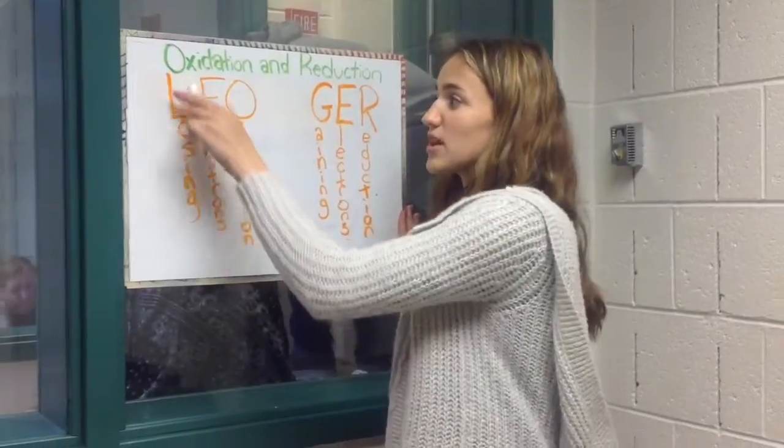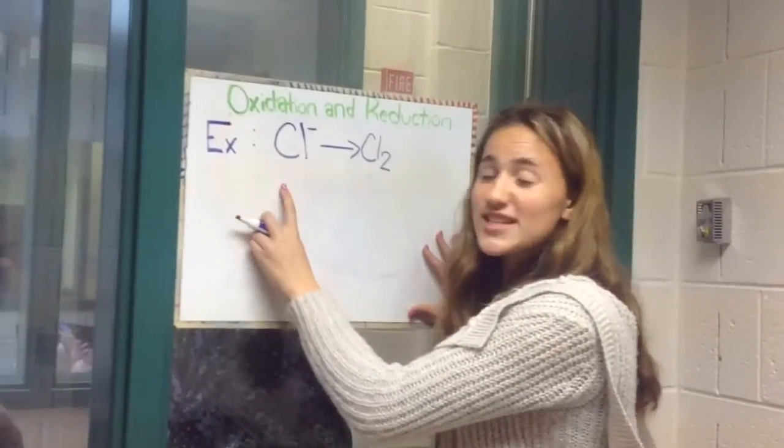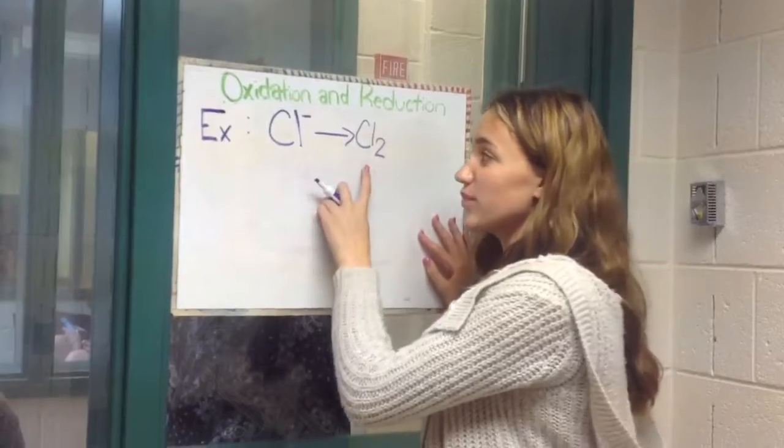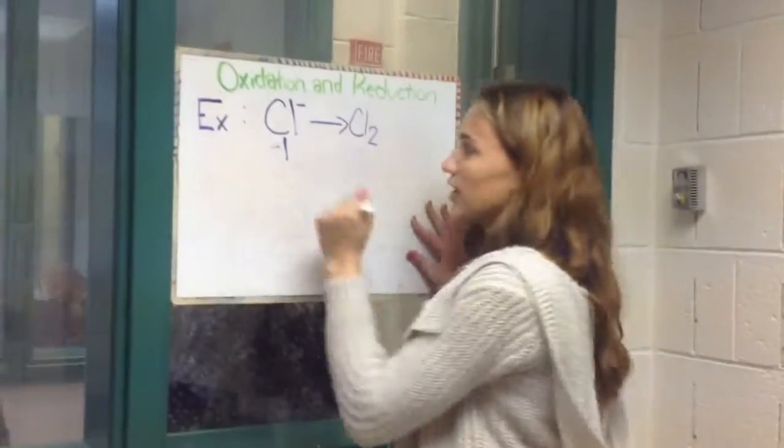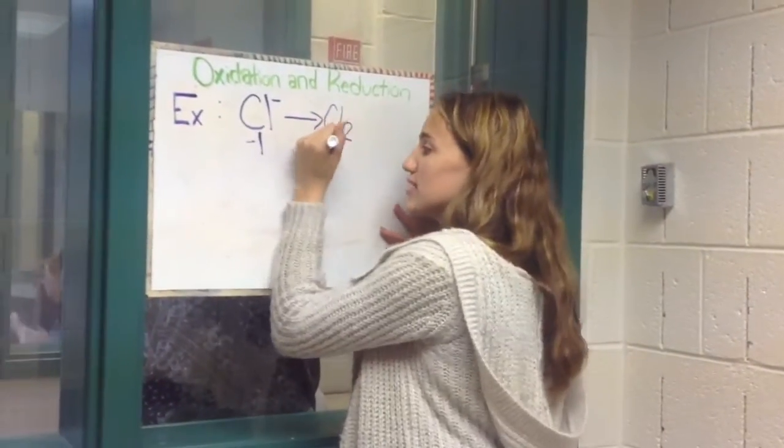Now let's do a couple examples of oxidation and reduction. Our first example is Cl- yielding Cl2. Since this has a negative 1 charge, the charge is negative 1. However, this has no charge, so it's 0.